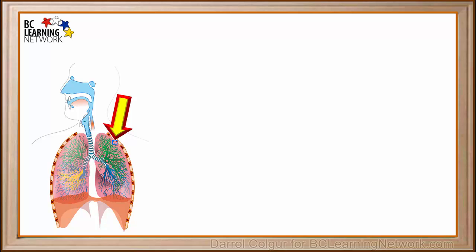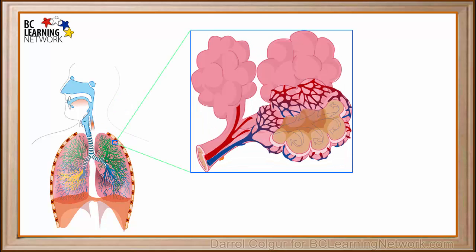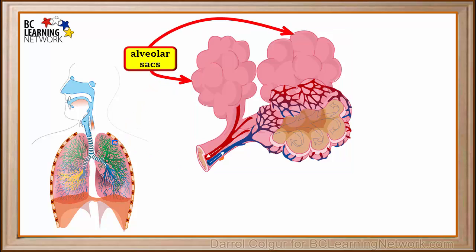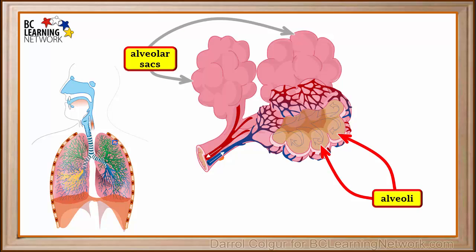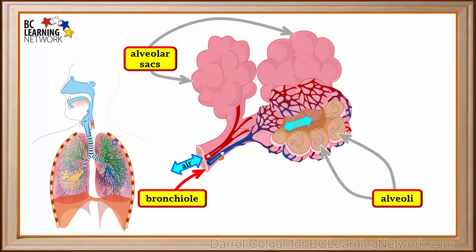Now we'll take a closer look at the ends of the bronchioles. If we take this little blue square and enlarge it, we'll represent it by this diagram. These are clusters of tiny air sacs or alveolar sacs. Each tiny sac is called an alveolus. It is hollow inside and has a very thin membrane on the outside. Gas exchange between the lungs and the blood occurs in this membrane. The plural of alveolus is alveoli. It has been estimated that each lung contains up to 300 million alveoli. This provides a huge surface area for the gas exchange needed by our body. Air enters and leaves the alveoli through the bronchioles. A very dense bed of tiny capillaries surrounds each alveolus, bringing blood into very close contact with the outer membrane of the alveoli, through which oxygen and carbon dioxide diffuse.